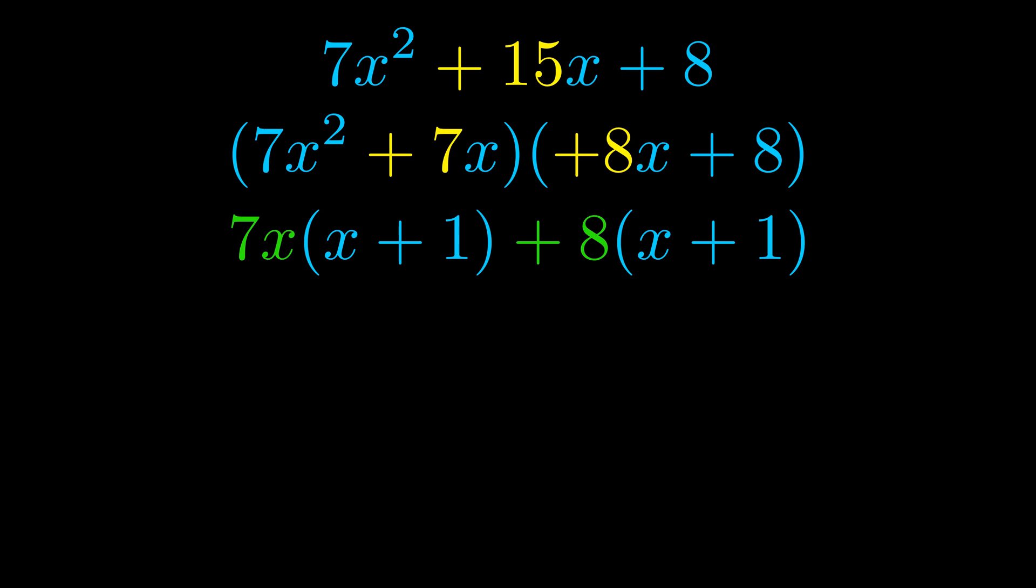Notice also how what remains inside of the parentheses is the same in both cases. The blue values are the same. Those blue values will become one of our factors and we will combine the two green values the GCFs that we pulled out to get the other one. And that is our fully factored equation.